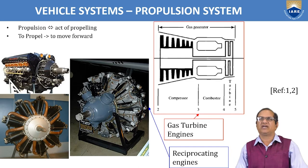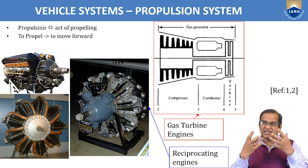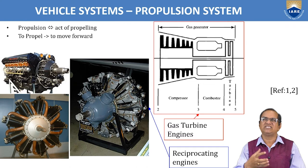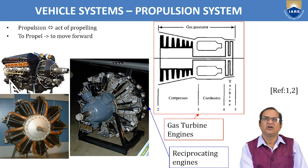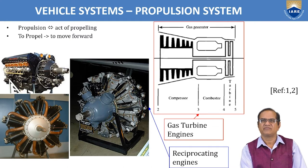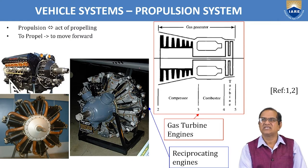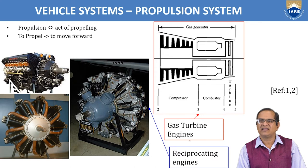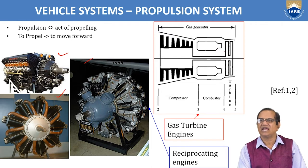Next is the propulsion system in the vehicle system. The aircraft must be propelled — an engine must operate and provide thrust. Propulsion means to propel, to move forward. There are different engine types: piston engines arranged in axial or circular configurations, turbo engines, gas turbine engines, and reciprocating engines — both rotary and reciprocating types.